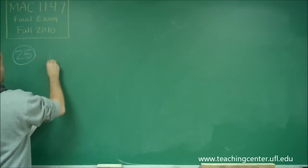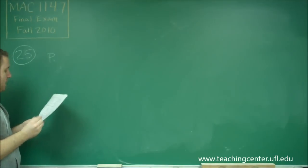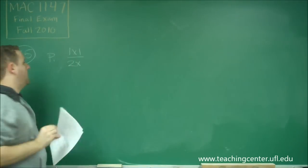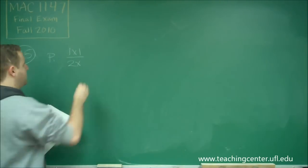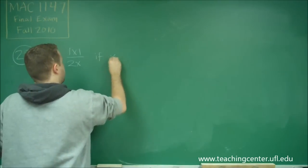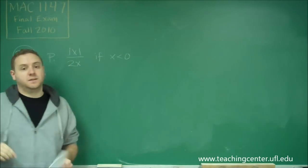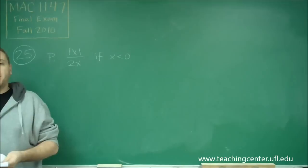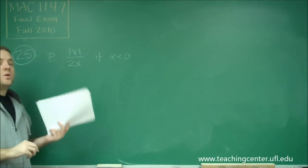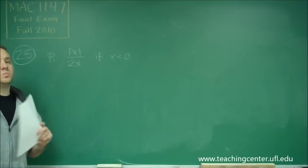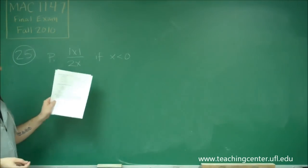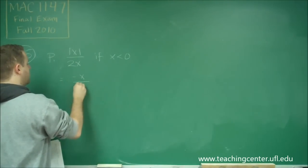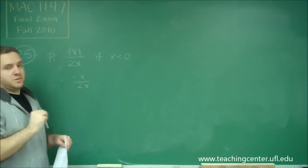So, we'll start with statement P, and we have absolute value of x over 2x if we know that x is negative. So, all we have to do here is replace our absolute value. You know that if x is negative, we can replace absolute value of x with minus x. We can always do that as long as x is negative. So, this is the same thing as negative x over 2x,